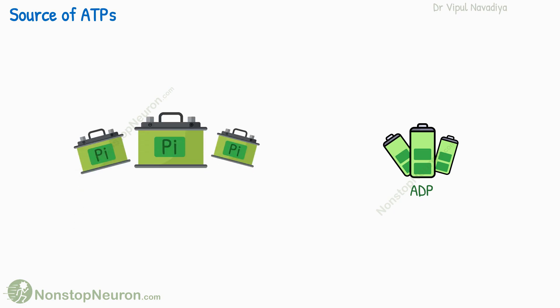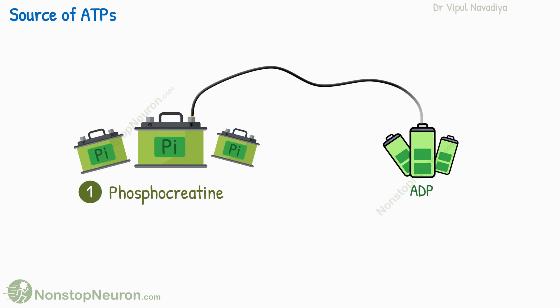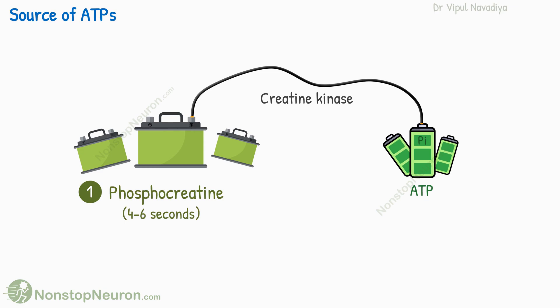The first source is phosphocreatine. It acts as a temporary energy buffer. It carries a high-energy phosphate. By the enzyme creatine kinase, this phosphate is transferred to ADP, thus forming ATP. However, the quantity of phosphocreatine is also limited, and it can generate ATPs only for an additional 4 to 6 seconds.